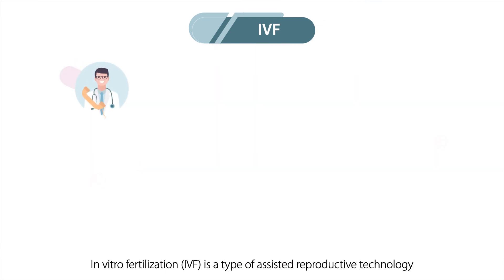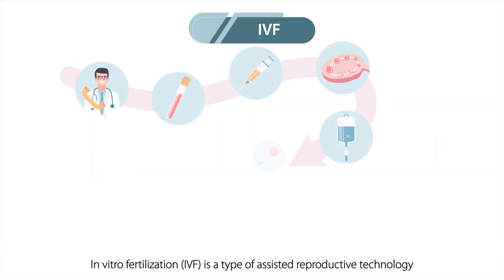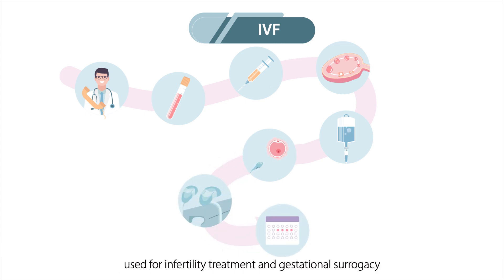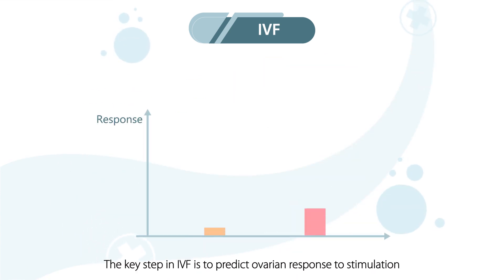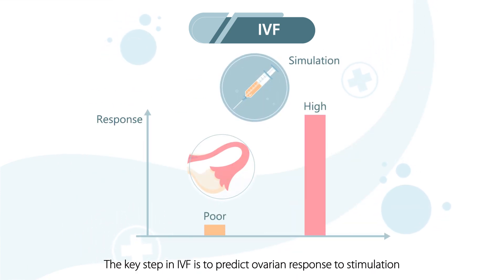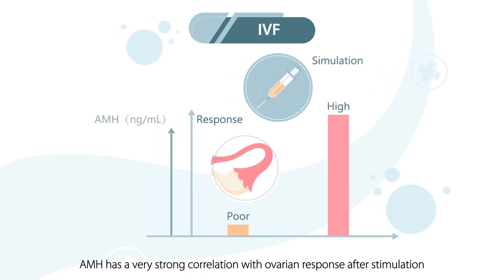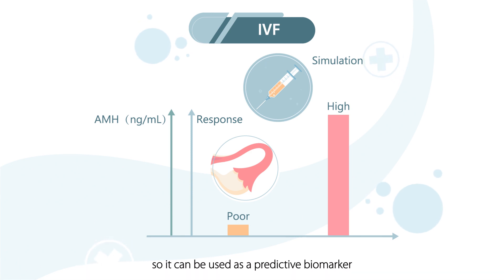About one in six couples worldwide experience infertility. In vitro fertilization, IVF, is a type of assisted reproductive technology used for infertility treatment and gestational surrogacy. The key step in IVF is to predict ovarian response to stimulation. AMH has a very strong correlation with ovarian response after stimulation, so it can be used as a predictive biomarker.